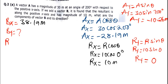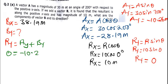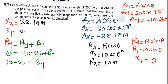Now I find By. Ry = Ay + By. Ry is 0 and Ay is negative 10.26. So 0 = negative 10.26 + By. Shifting gives By = 10.26 meters.